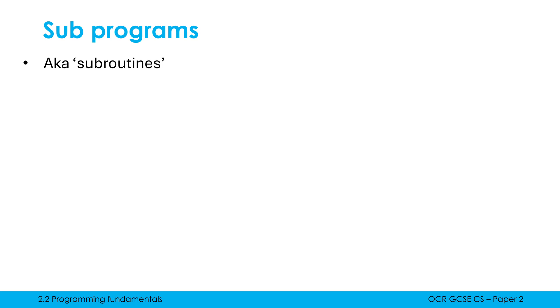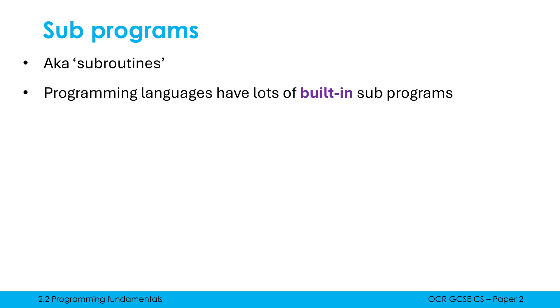Just to put in a few more things before we end this video: subprograms have got a few different names and different programmers call these by different names. 'Subroutines' is, I would say, the most common alternative. At A-level it's called subroutine — unfortunately it's a little bit confusing. Subroutine and subprogram mean the same thing; I often slip into calling it a subroutine because I'm more used to that term.